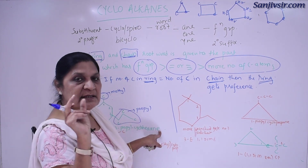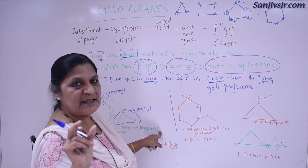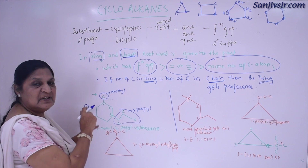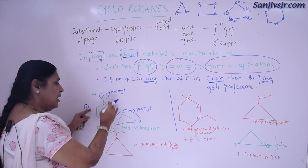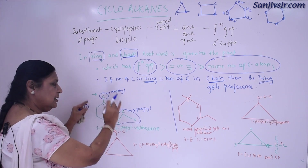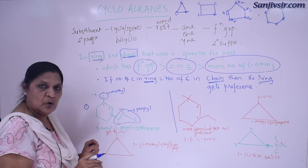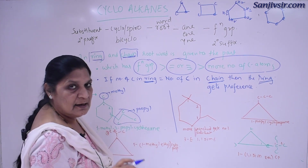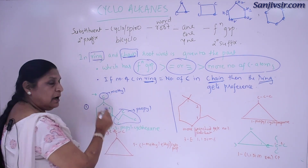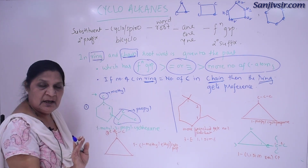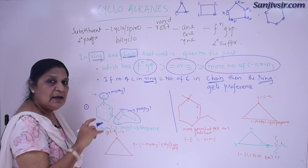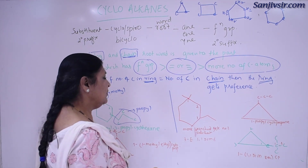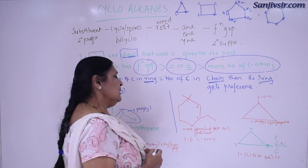The root name will be cyclohexane — this has six carbon atoms in the ring, which is more than any side chain — and therefore this is cyclohexane. There is no confusion about one or three: we cannot put one there because alphabetical order must be followed.